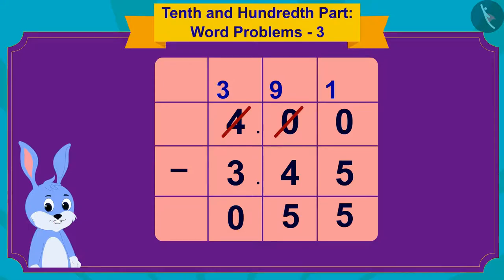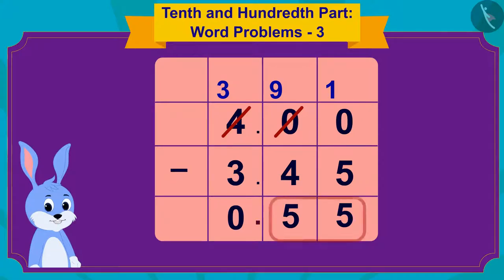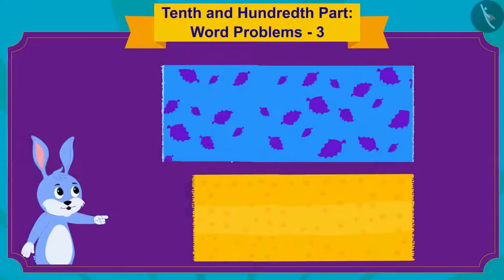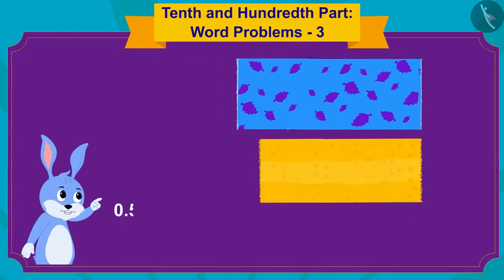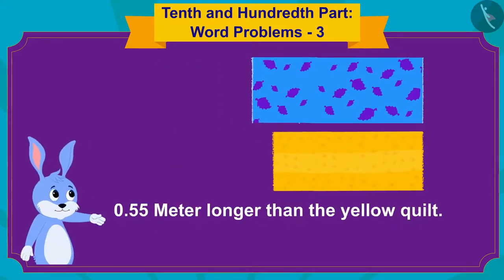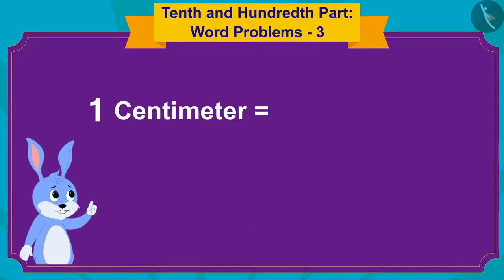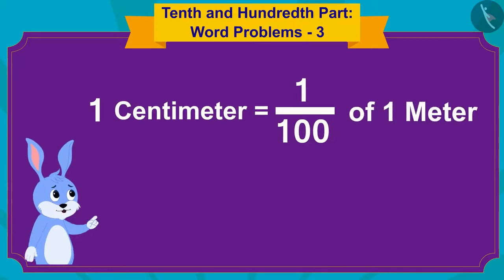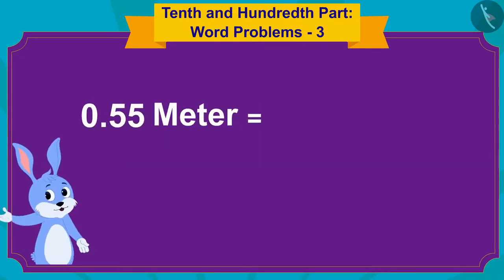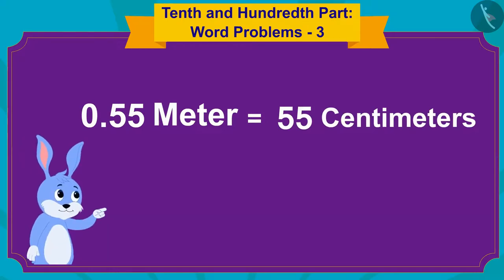Now, because there are two digits after the decimal point, I will write the decimal point in the answer such that there are two digits after the decimal point, thought Bunny. The blue quilt is 0.55 meter longer than the yellow quilt. And because a centimeter is the 100th part of a meter, 0.55 meter will be equal to 55 centimeters.